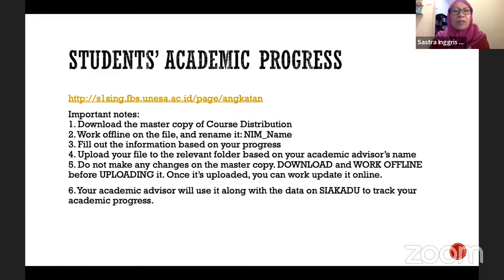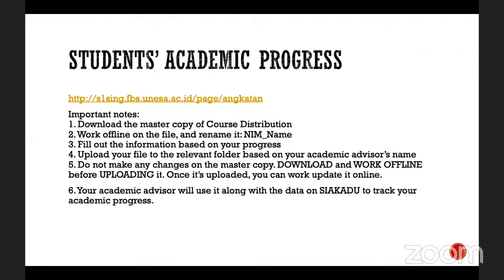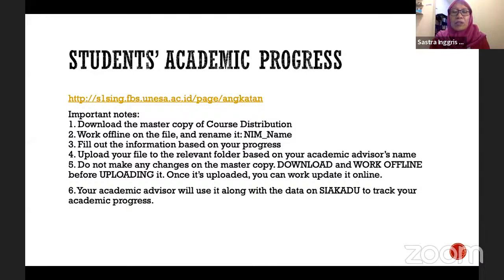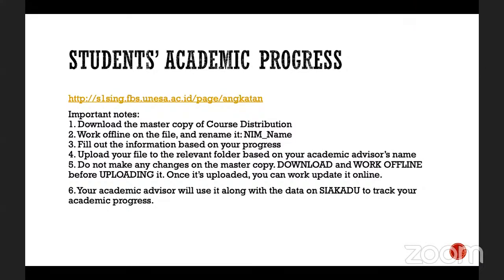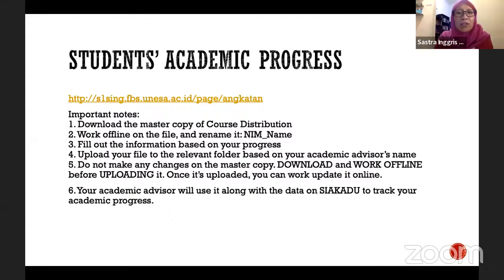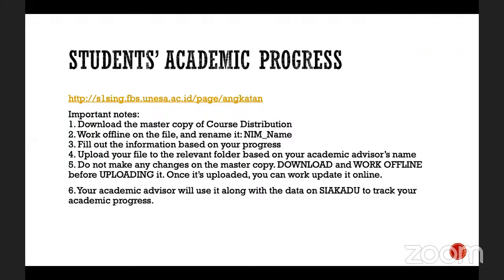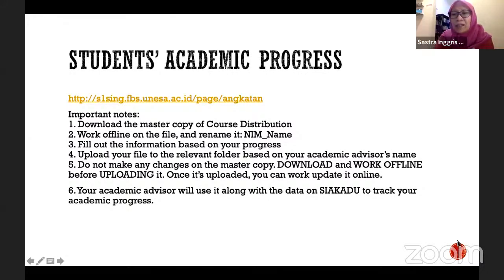Everyone will need their own file so it won't be overwritten. Please take the master copy, download it, work offline, fill out the information, change the name to your student number and your name, and then upload it to the relevant folder according to your academic advisor's name. Some students from the 2020 and 2021 cohorts have already uploaded their academic progress — thank you very much. This will make it easy for your academic advisor to track your progress.